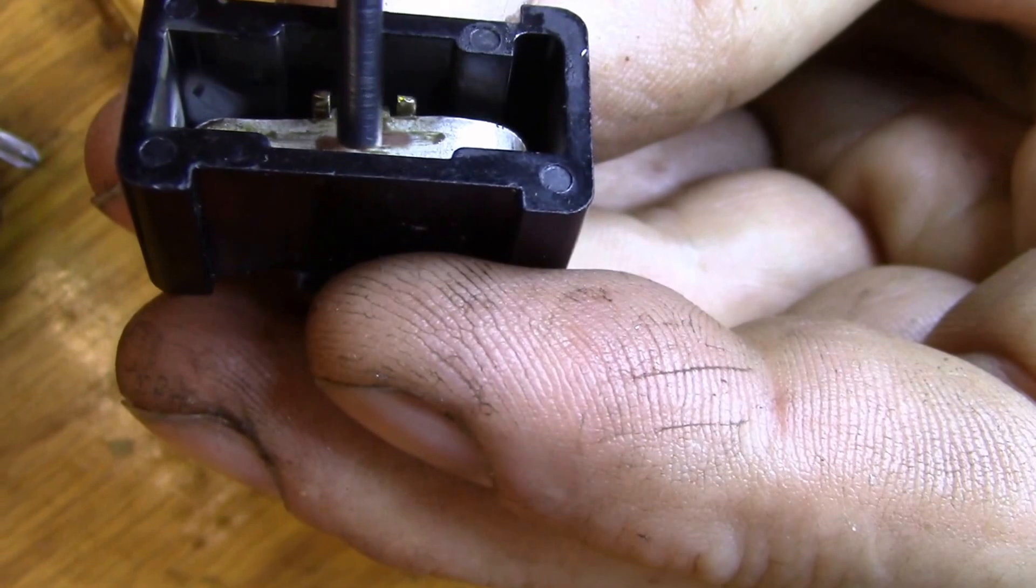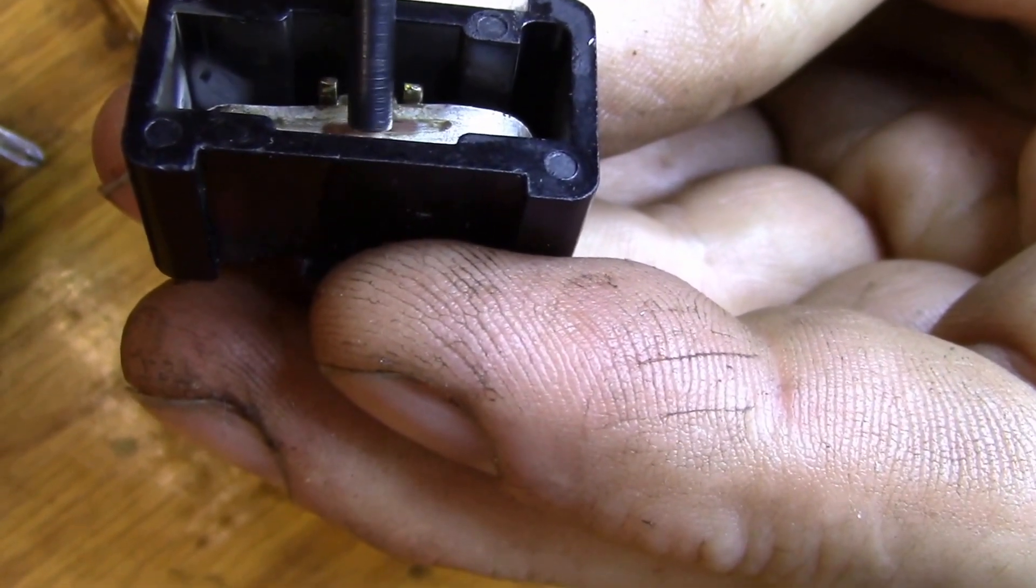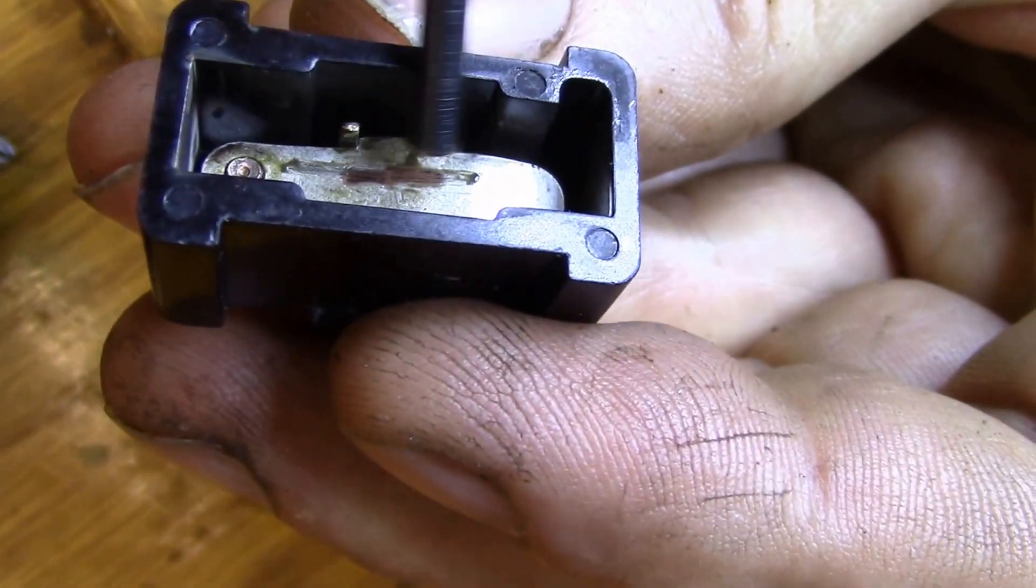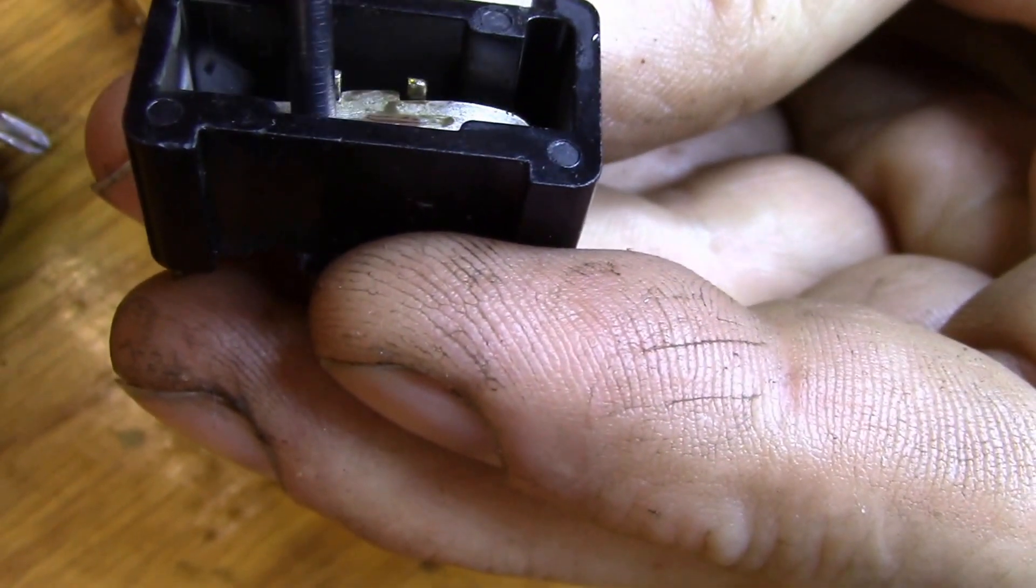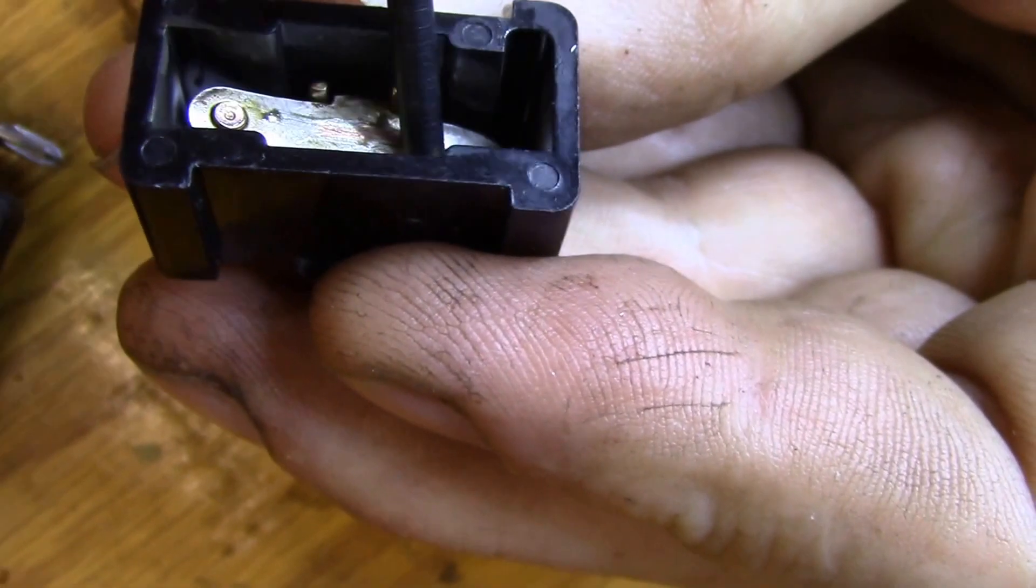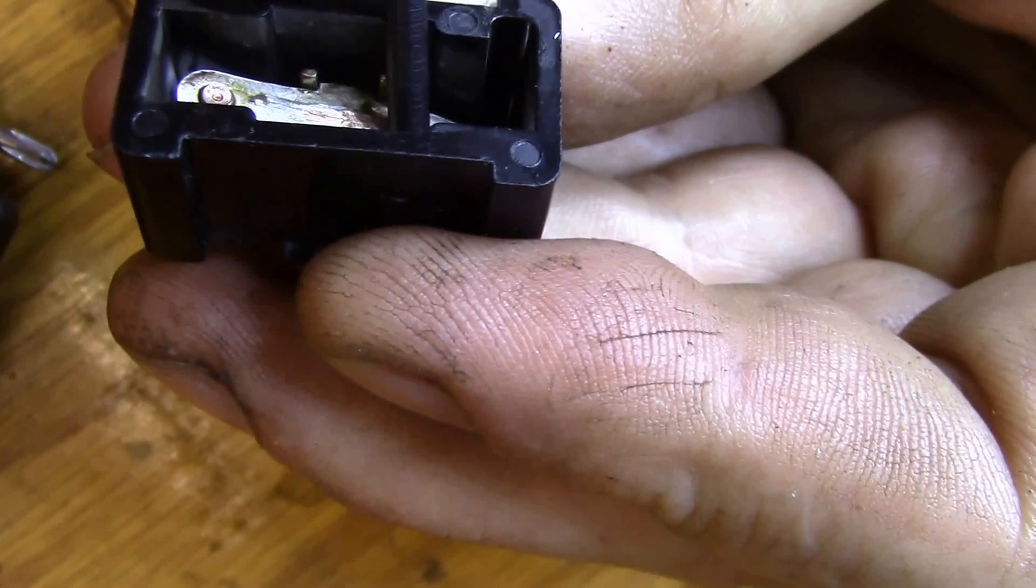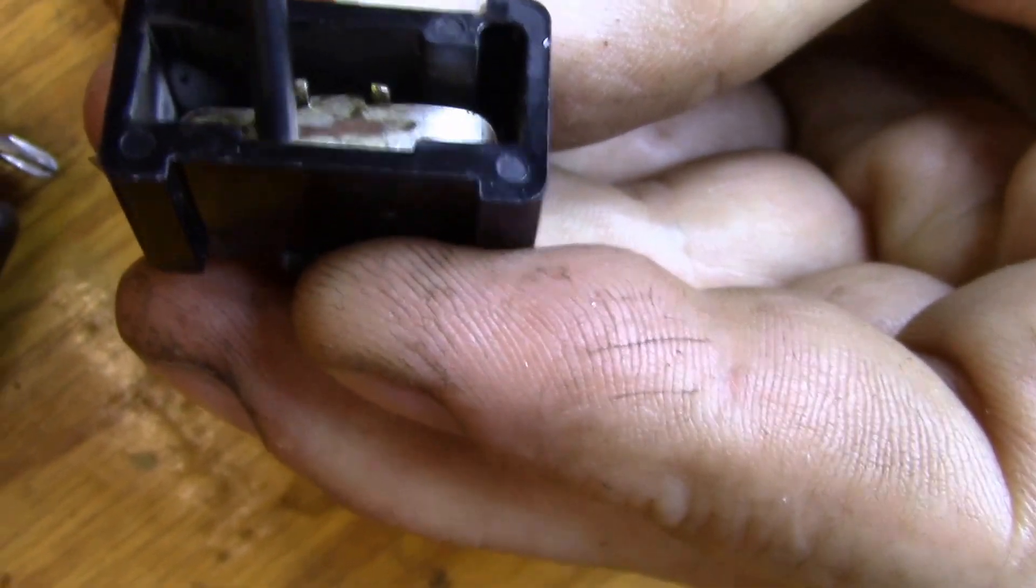If you go along here, you can see the shiny part where the switch used to move. You get that over-center action. Once you go past this outside pivot it drops off, and once you go past this pivot over here it's stuck down. That's how you get that snap action.